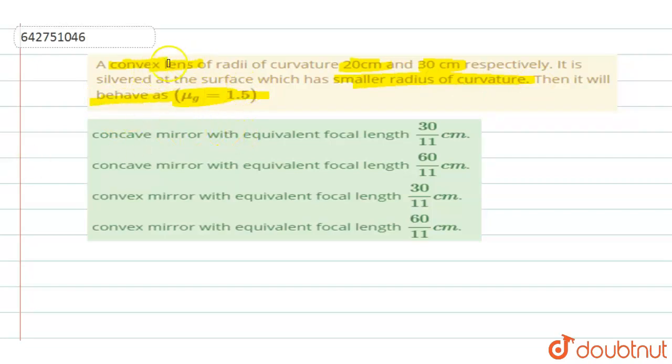Now a convex lens when it is having a radius of curvature 20 and 30 cm, let us first find out the focal length of that lens. So to find the focal length of the lens by using the lens maker's formula. Since we are finding it for a lens, we will call it as FL.